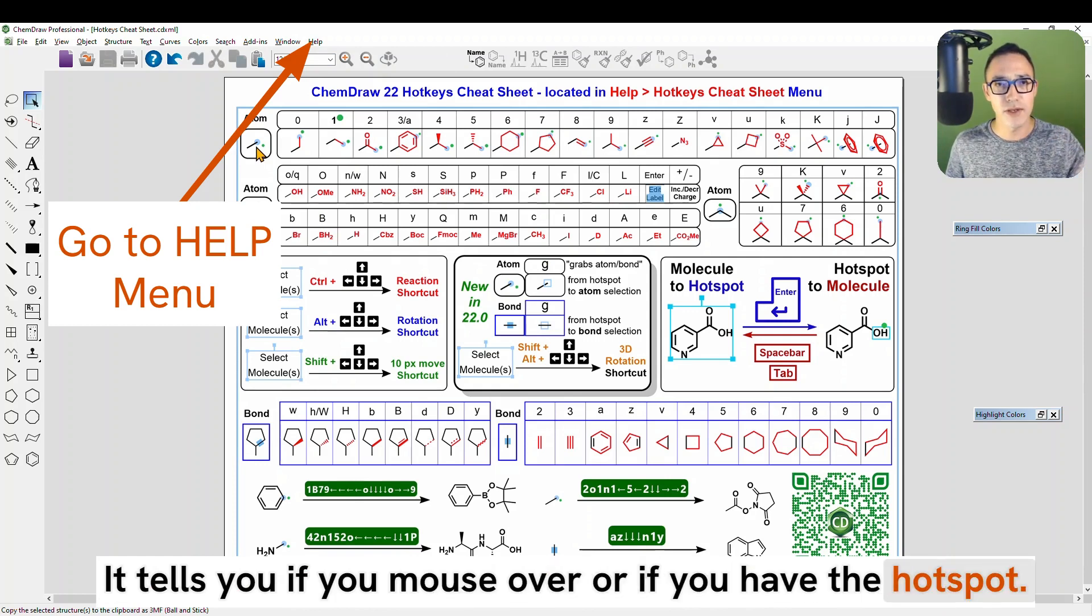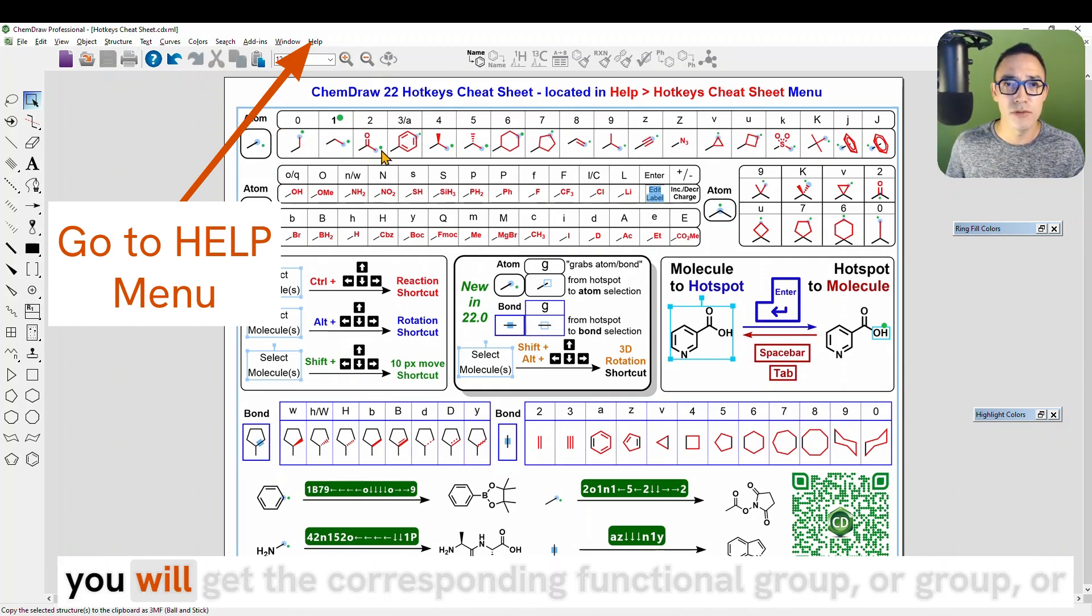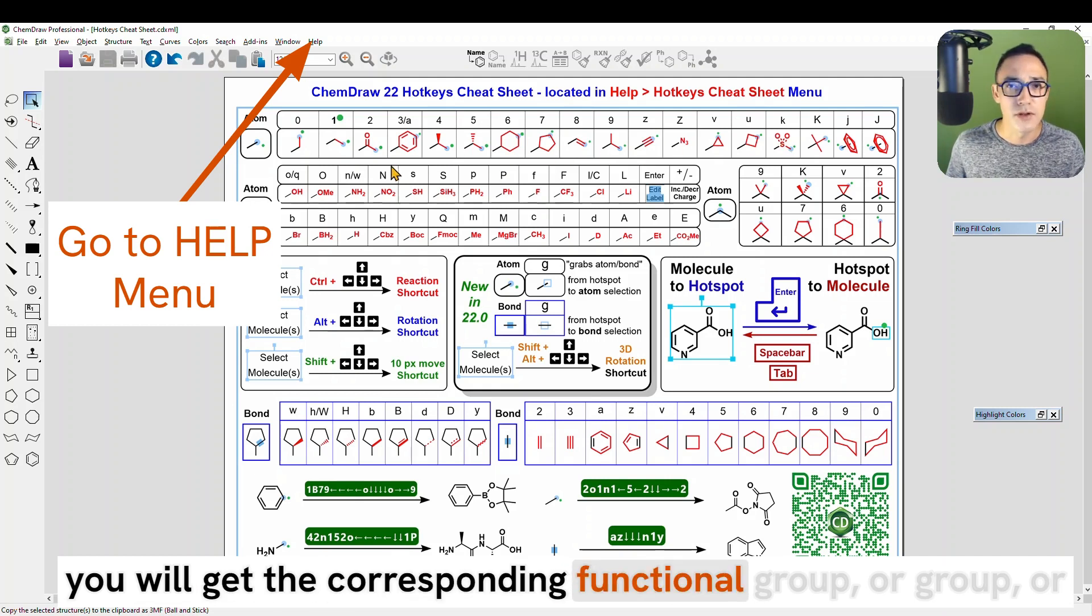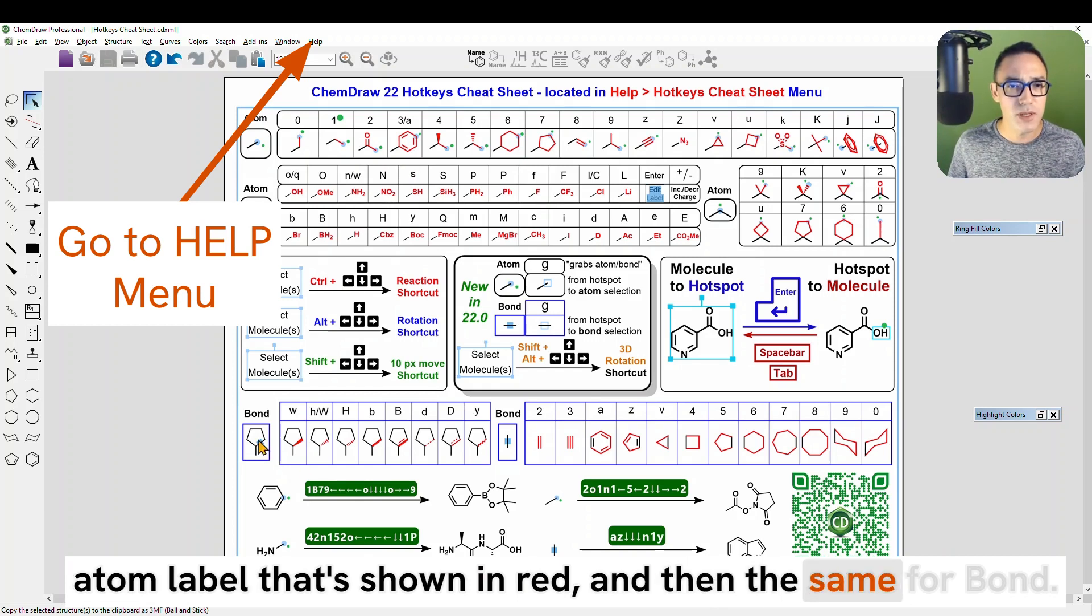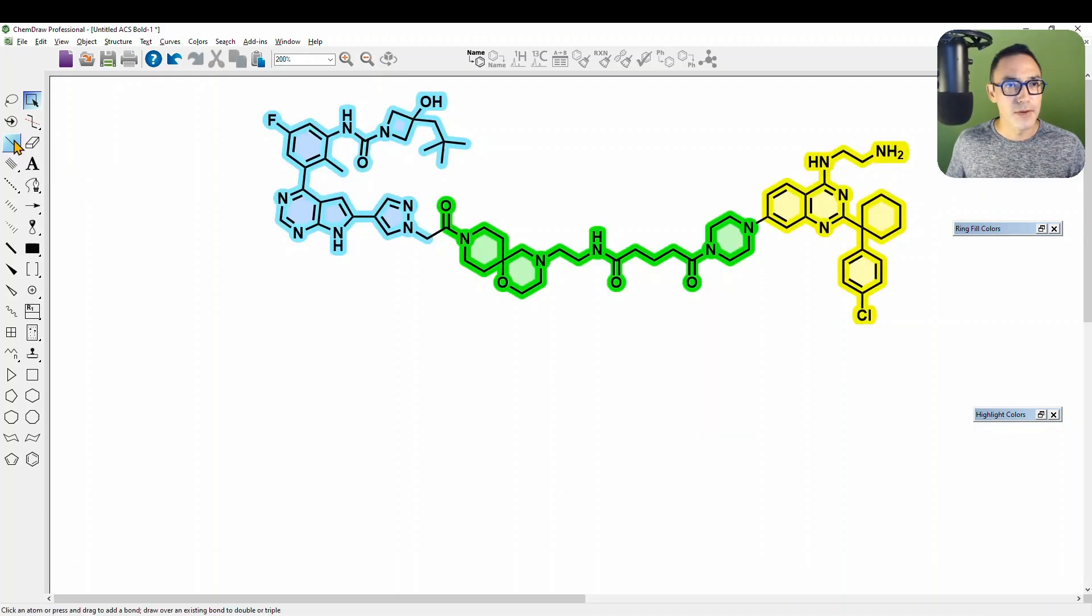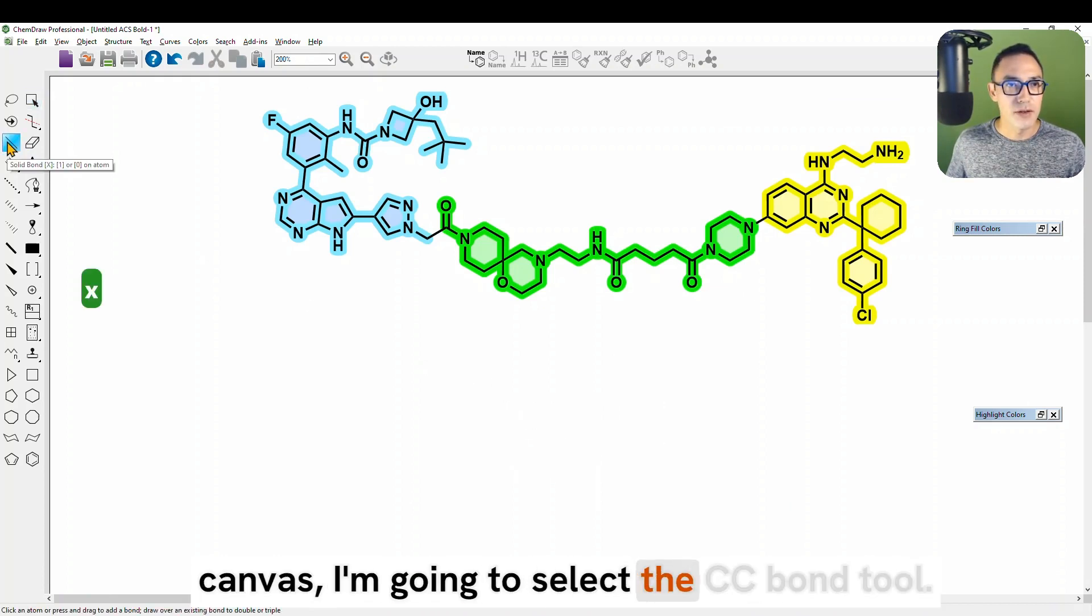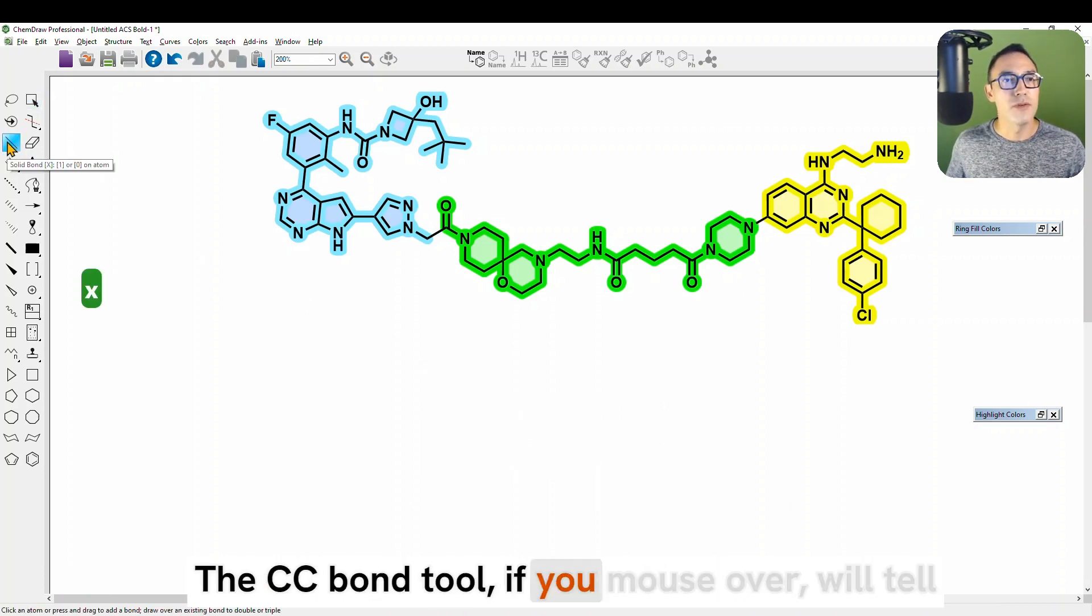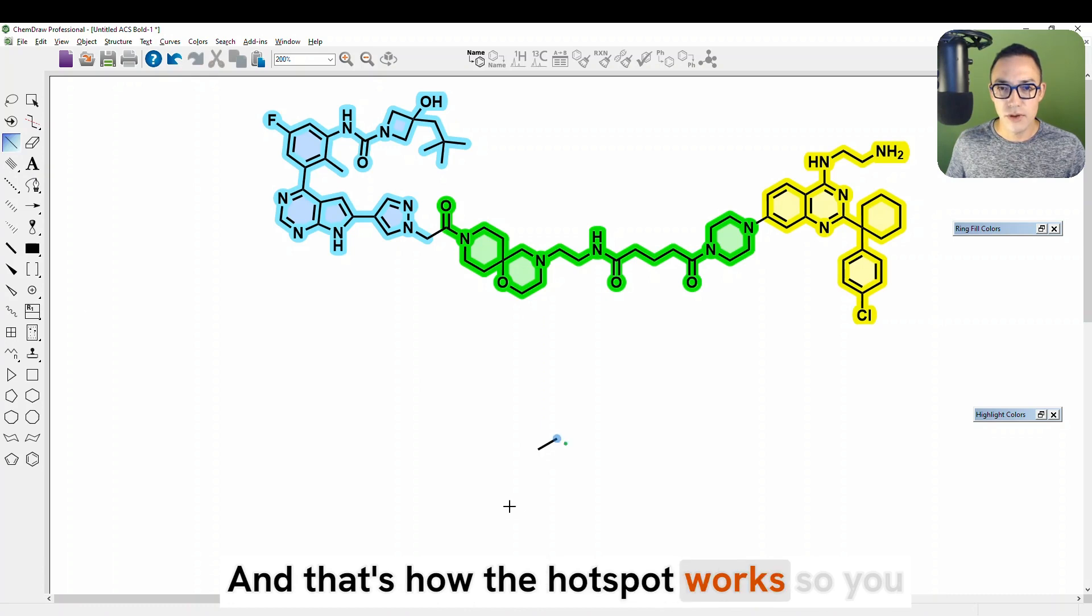It tells you if you mouse over or if you have the hotspot over an atom, and then you press this key on your keyboard, you will get the corresponding functional group or group or atom label that's shown in red. And then the same for bond. If I press X while I'm not mousing over the canvas, I'm going to select the CC bond tool.